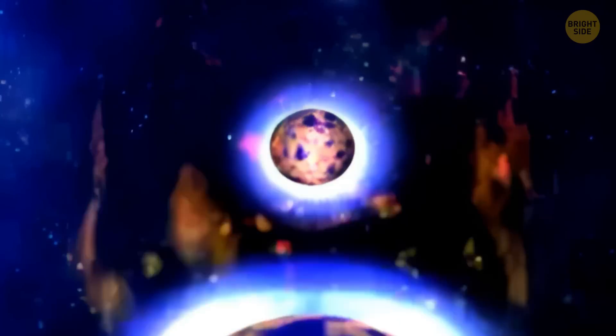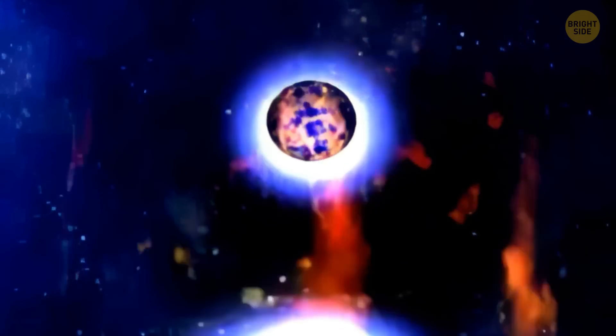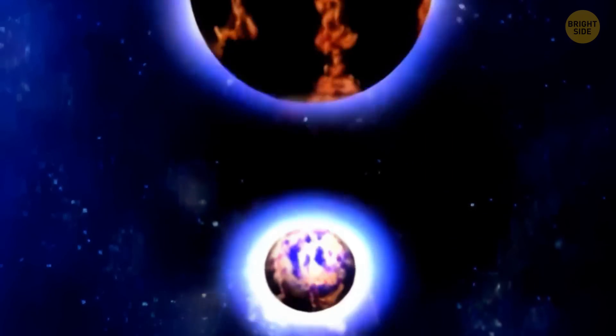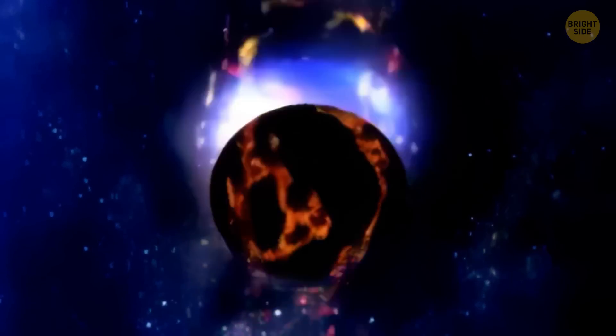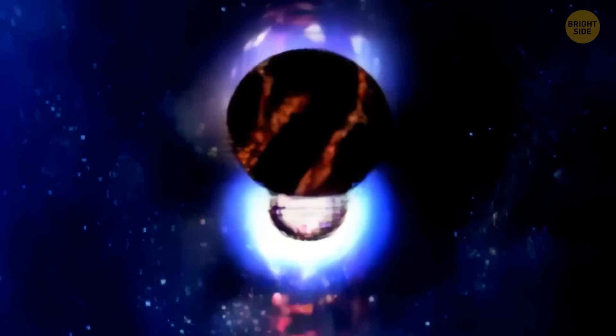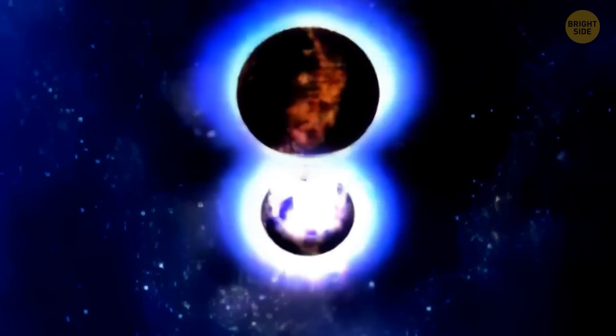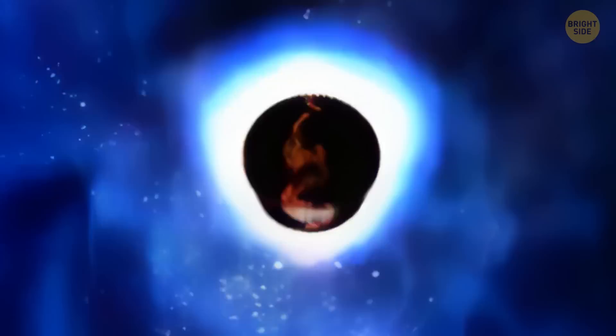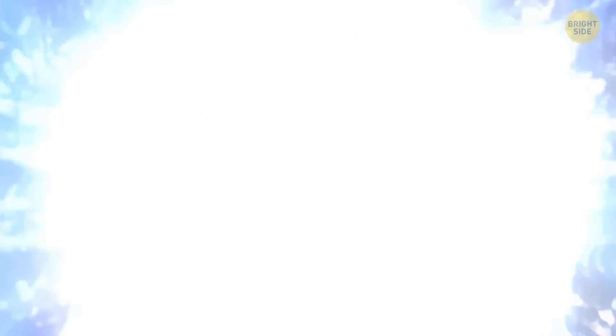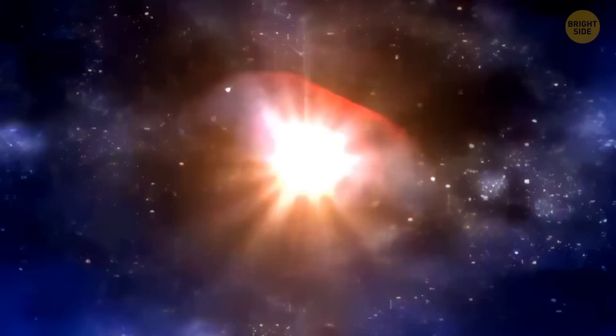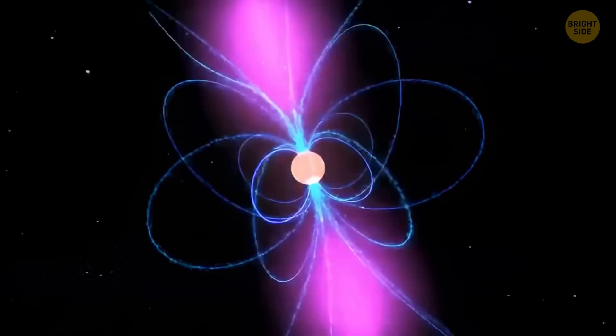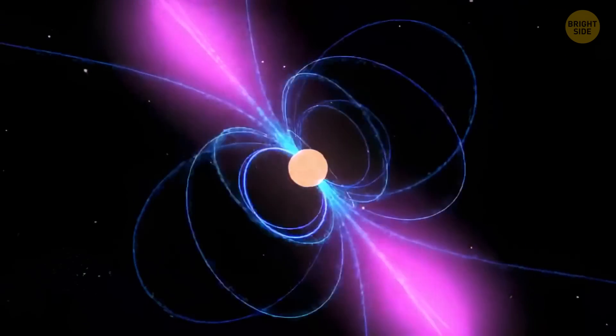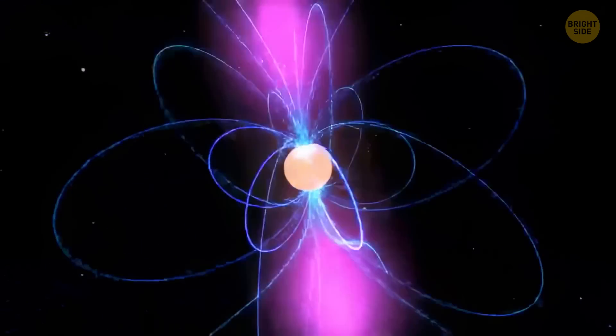Speculation began soon after the discovery. One idea is that it could have been a collision between two neutron stars traveling far outside their host galaxies. These two could have been spiraling toward each other for billions of years. And when they collided, they produced a flare over 100 times brighter than a normal supernova. For this hypothesis to be correct, one of these neutron stars would have to be highly magnetized, amplifying the explosion.